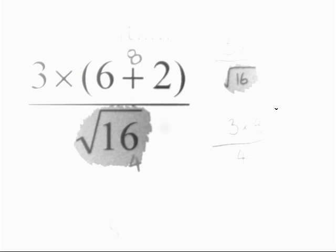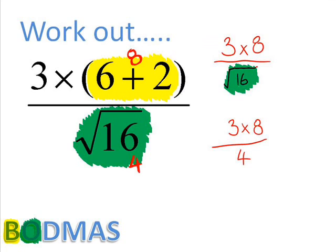What part do we do now? Well, we go across, we do the times part. So 3 times 8 is 24. This leaves 24 over 4. And then 24 over 4 gives us the answer of 6.